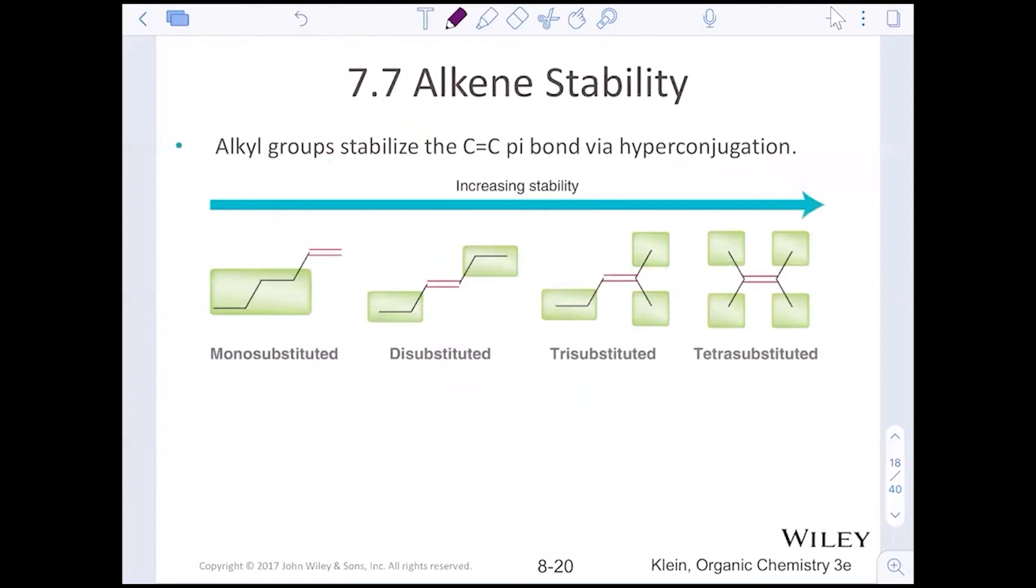Some other stability that we can see is that alkyl groups stabilize the carbon-carbon pi bond. And so the more R groups you have, the more stable you are. Notice mono-substituted has one R group. Di-substituted is two. From that, what we can see is the cis is lower in energy than the trans. And then tri-substituted with three R groups and tetra-substituted with four.